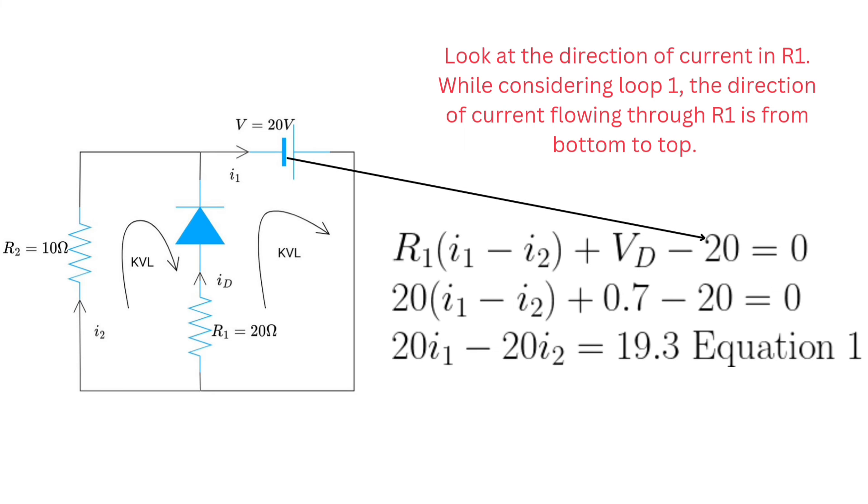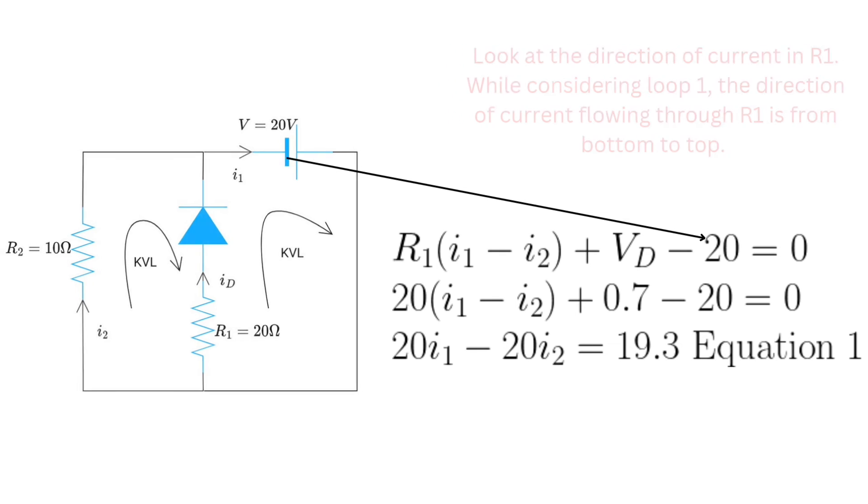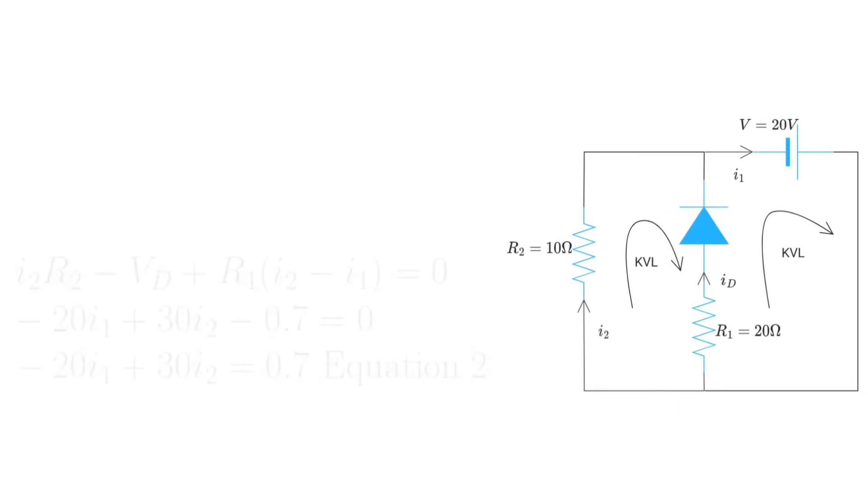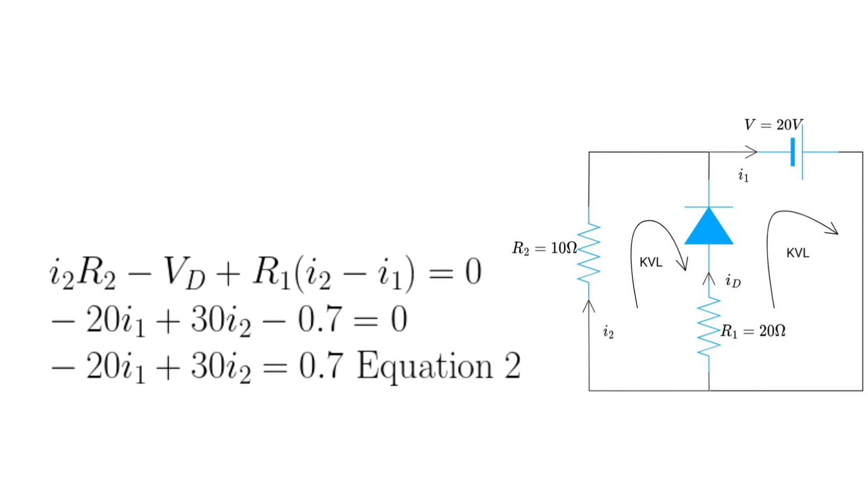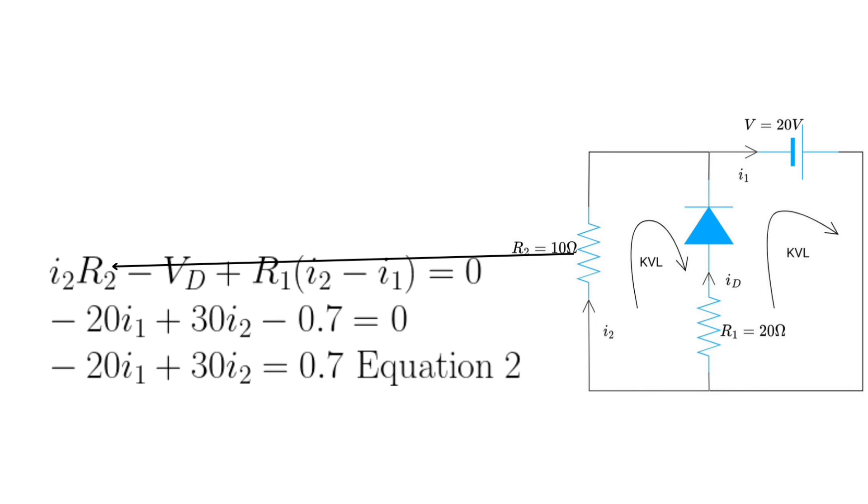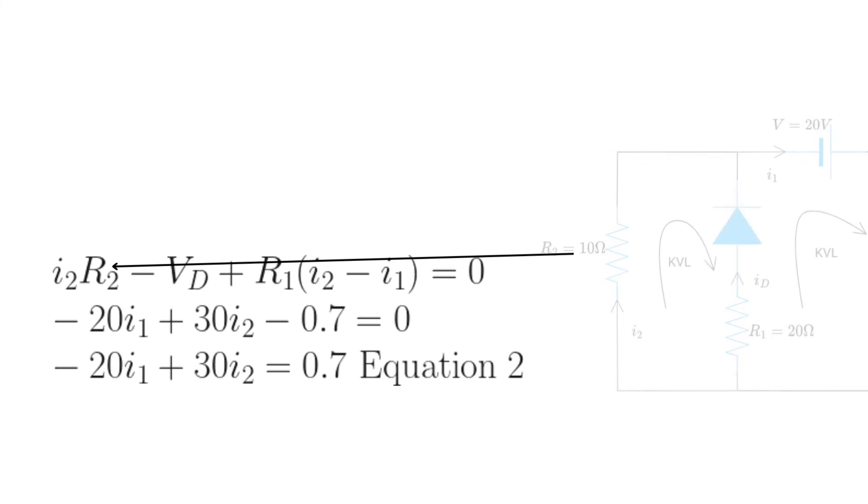V is equal to 20 volt, so we write it as minus 20. Similarly, apply KVL to loop two. We get equation two from this. I2 R2.